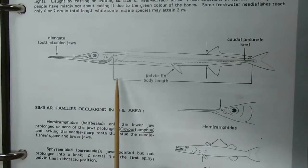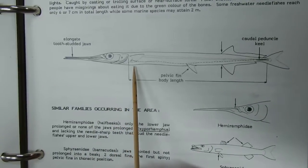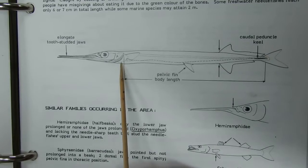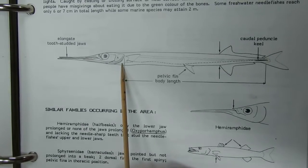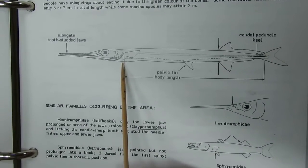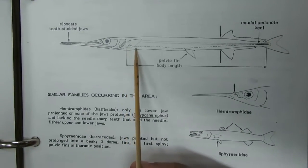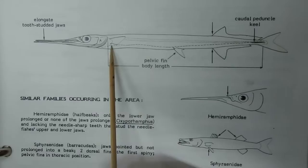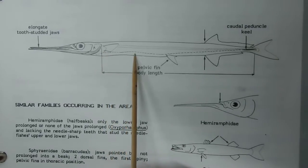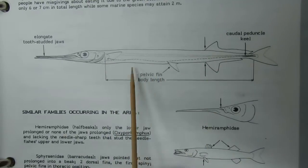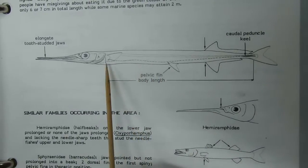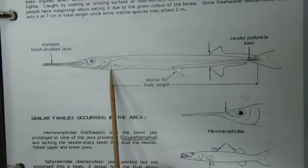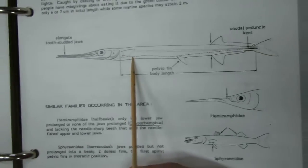Next is Balistidae and Haemulidae. The lateral line runs down from the pectoral fin origin and then along the ventral margin of the body.